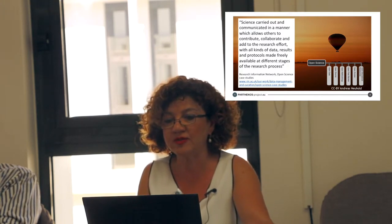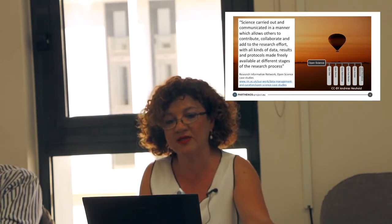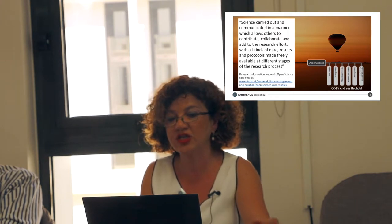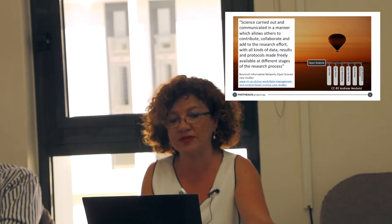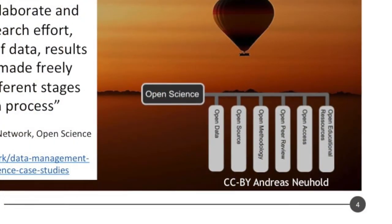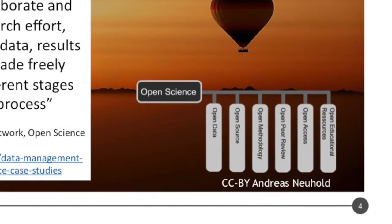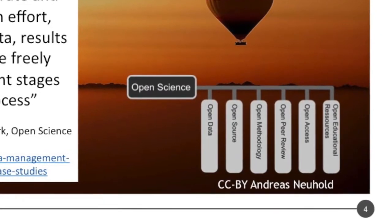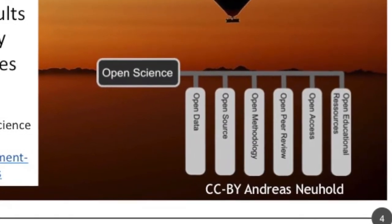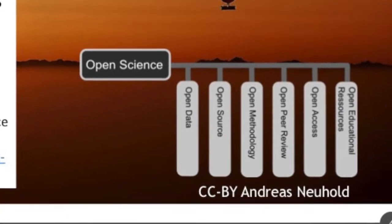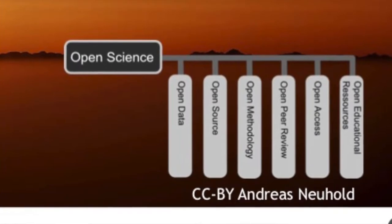This is the definition from the Research Information Network in the UK, which captures the systemic change in the way science and research have been carried out for the last 50 years — shifting from the standard practice of publishing research results in scientific publications, towards sharing and using all available knowledge at an earlier stage. Open science is more than open access publishing, as shown in the diagram of Andreas Newholt. It includes open data, open source — meaning sharing code and tools to allow others to reproduce work — open methods for documenting and sharing workflows, and using web-based tools to facilitate collaboration and interaction from the outside world.